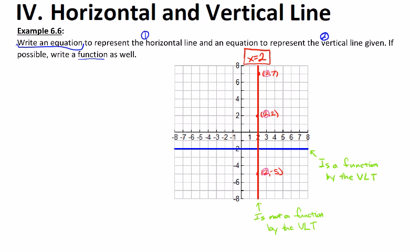And the nice thing is the horizontal line can be analyzed in the same way. If I start picking different values from the horizontal line, so that point would be (-8, -2). This point right here would be (-3, -2). And I'll pick a point over here at (6, -2).